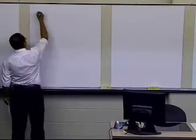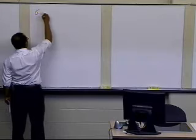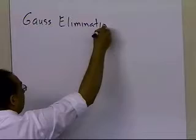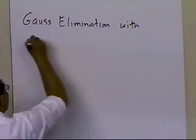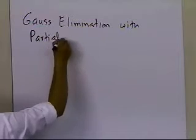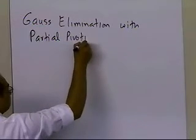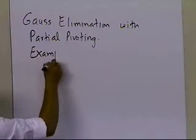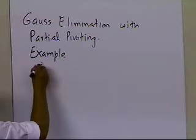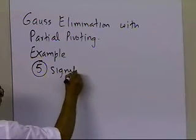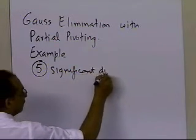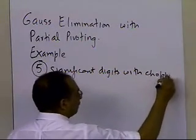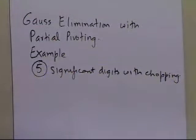In this segment, we're going to talk about Gauss elimination with partial pivoting, which is a way to find solutions to simultaneous linear equations. We are right now talking about an example, and in this example we are using something special: five significant digits with chopping for all of our intermediate as well as final calculations.